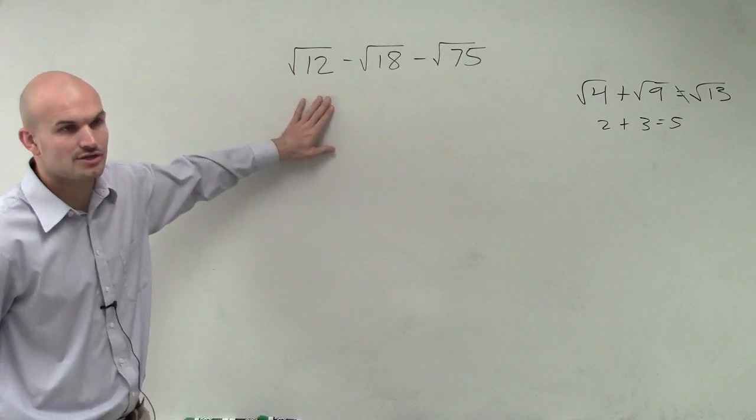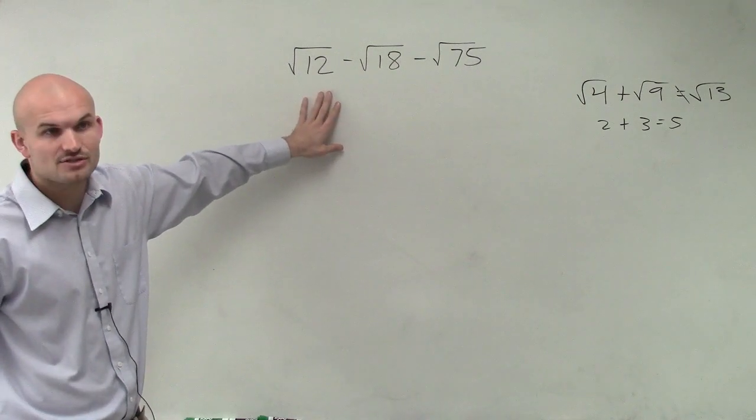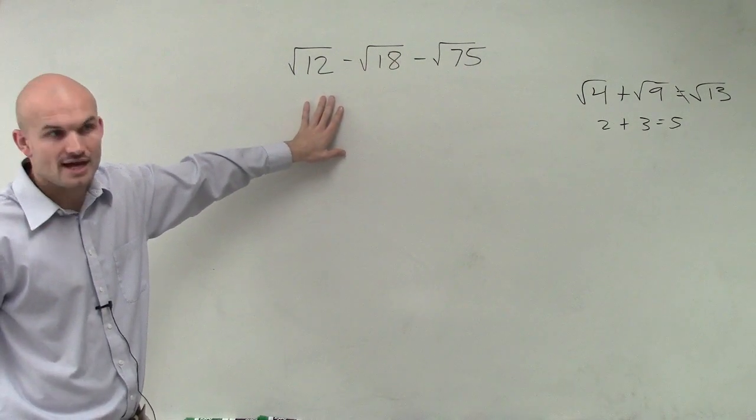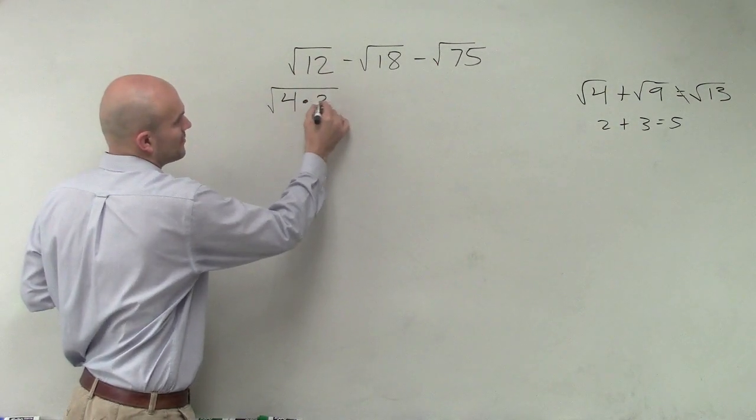So I look at 12, and I just go through my square numbers. So does 4 divide into 12? Yes, evenly. So I can rewrite this as a square root of 4 times 3.